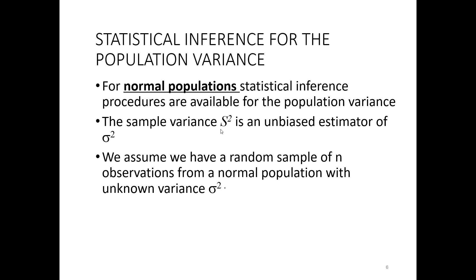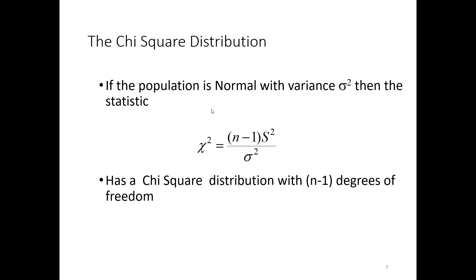The sample variance, which we call S-squared — we had sample standard deviation S before, now we have sample variance S-squared — is considered an unbiased estimator for the population variance. Our chi-squared test statistic is calculated as n minus one (the degrees of freedom) times the sample variance, divided by the population variance. That gives us our test statistic, which we'll use in step three of hypothesis testing for variance. The chi-squared distribution has n minus one as its degrees of freedom, similar to the t-distribution.